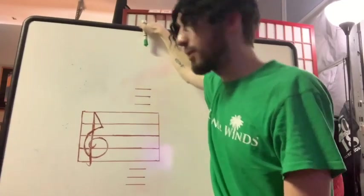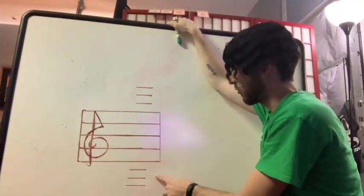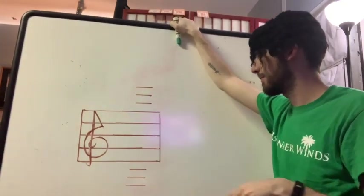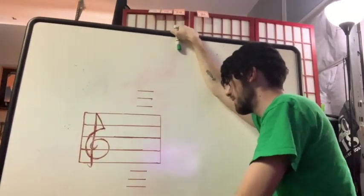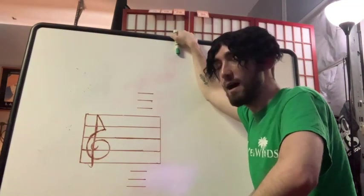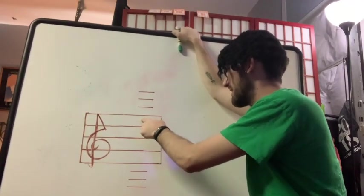As you can see here, I have a staff with a treble clef and I have three ledger lines above and below the treble clef. So by using our musical alphabet, we can infer that this is F, A, C, and E.